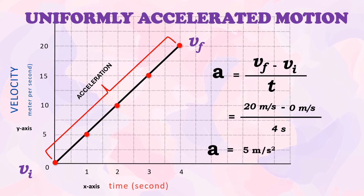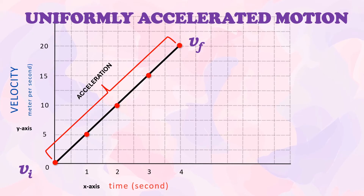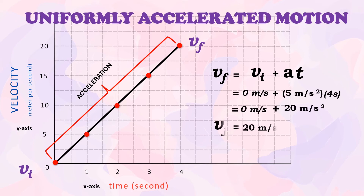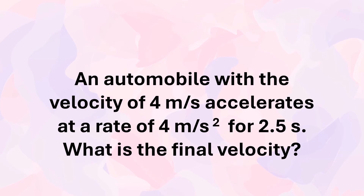We can calculate acceleration using the formula: acceleration equals final velocity minus initial velocity, divided by time. The answer in this example is 5 meters per second squared, meaning the object is accelerating at 5 m/s². This graph also describes the equation: final velocity equals initial velocity plus acceleration times time. Using this formula, the final velocity is calculated to be 20 meters per second, as indicated in the graph.